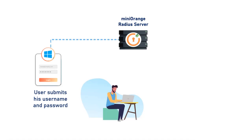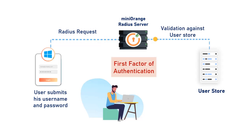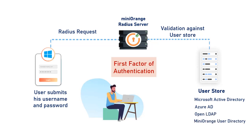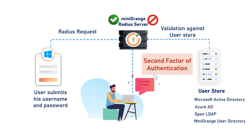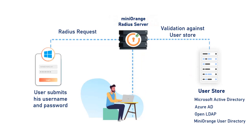User submits his username and password, which is accepted by the Mini Orange Radius server as a Radius request. The user can be validated against any user directory like Microsoft Active Directory, Azure AD, OpenLDAP, or you can keep users in Mini Orange user directory as well. After the first level of authentication, Mini Orange prompts the user with two-factor authentication and grants or revokes access based on the 2FA input by the user.